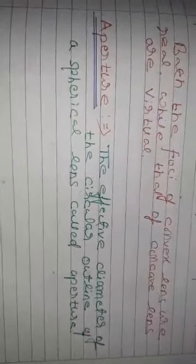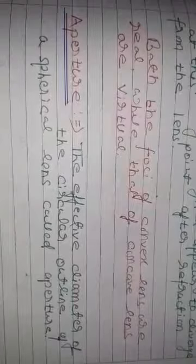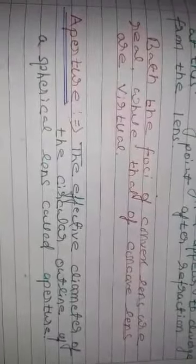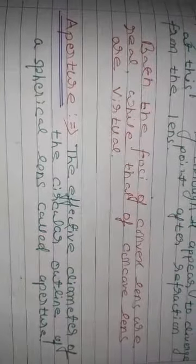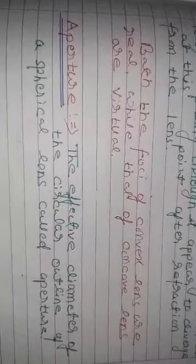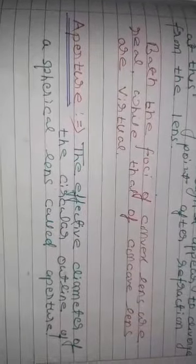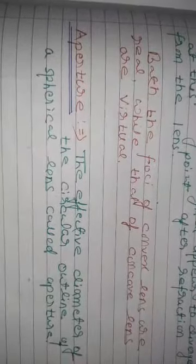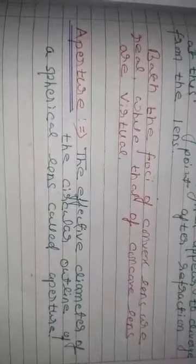Another definition is the aperture. The effective diameter of the circular outline of a spherical lens is called the aperture.